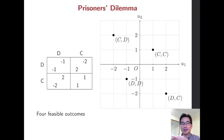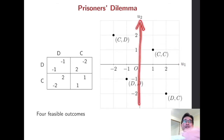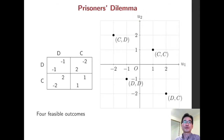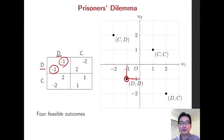Now let's focus on each player's payoff level in this plane. The horizontal axis is for player 1's payoff, or her utility u1, and the vertical axis is for player 2's payoff, or his utility u2. We have four different outcomes. For instance, if they play D and D, then both get negative 1, so this point represents that outcome.